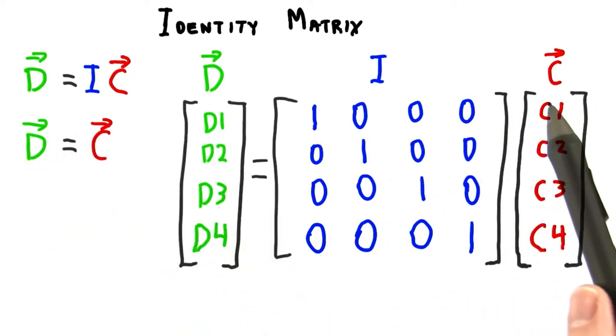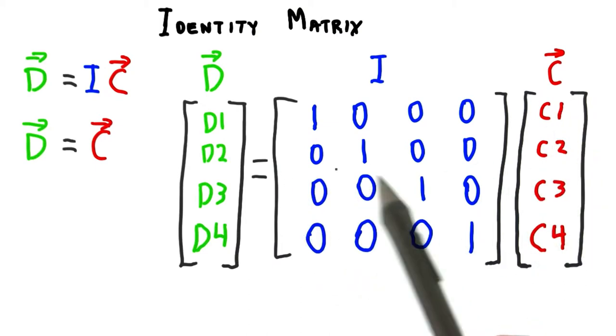The first row of the matrix selects the first coordinate out of the coordinate array. The second row selects the second coordinate and so on. Try it yourself.